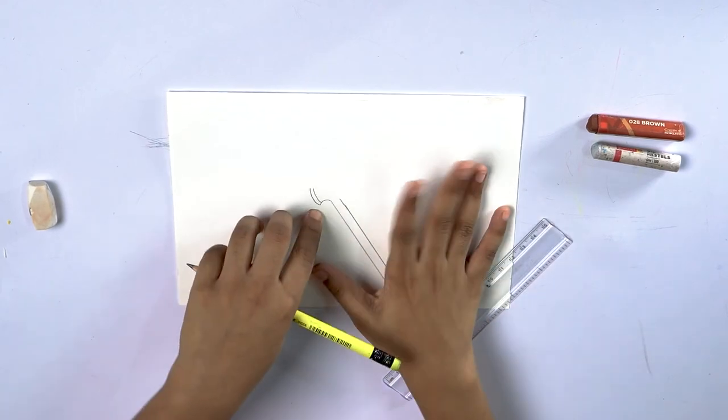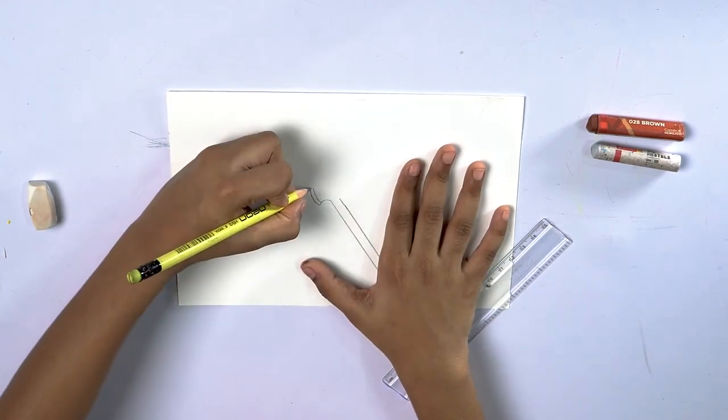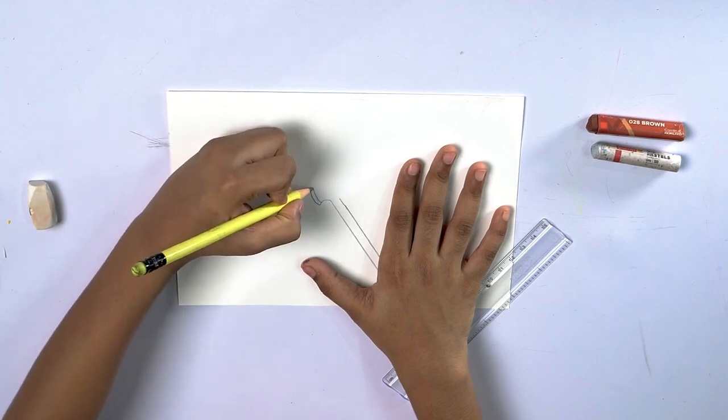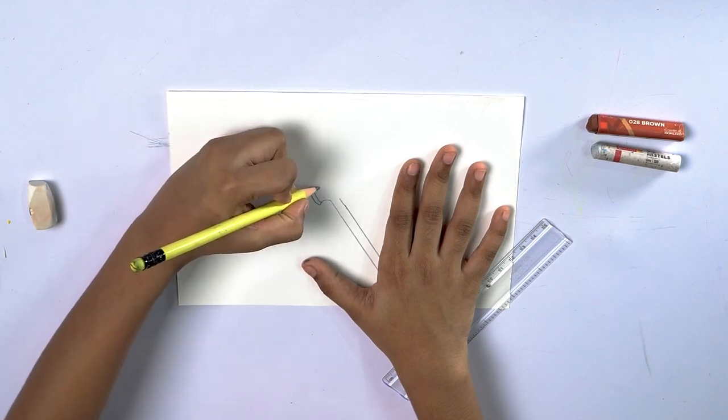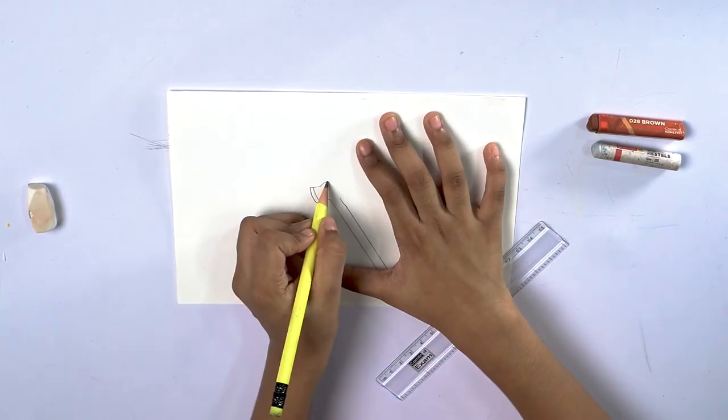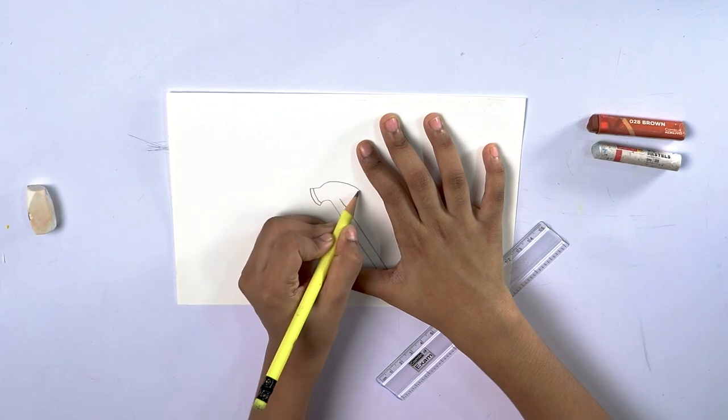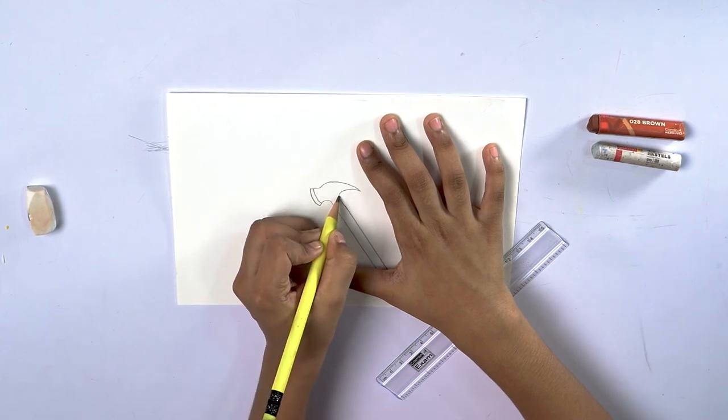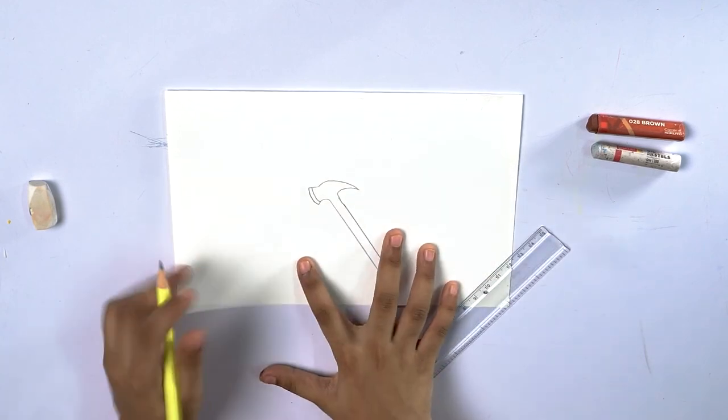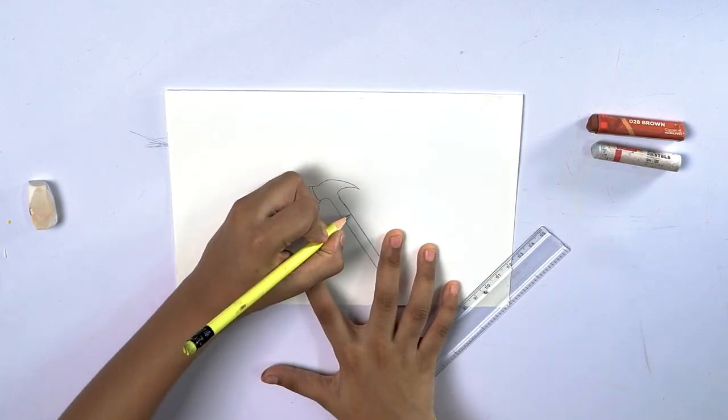Like this, and now we'll join them both. And from there we will make this kind of shape. From here we will draw like this, and then we will draw a line here.